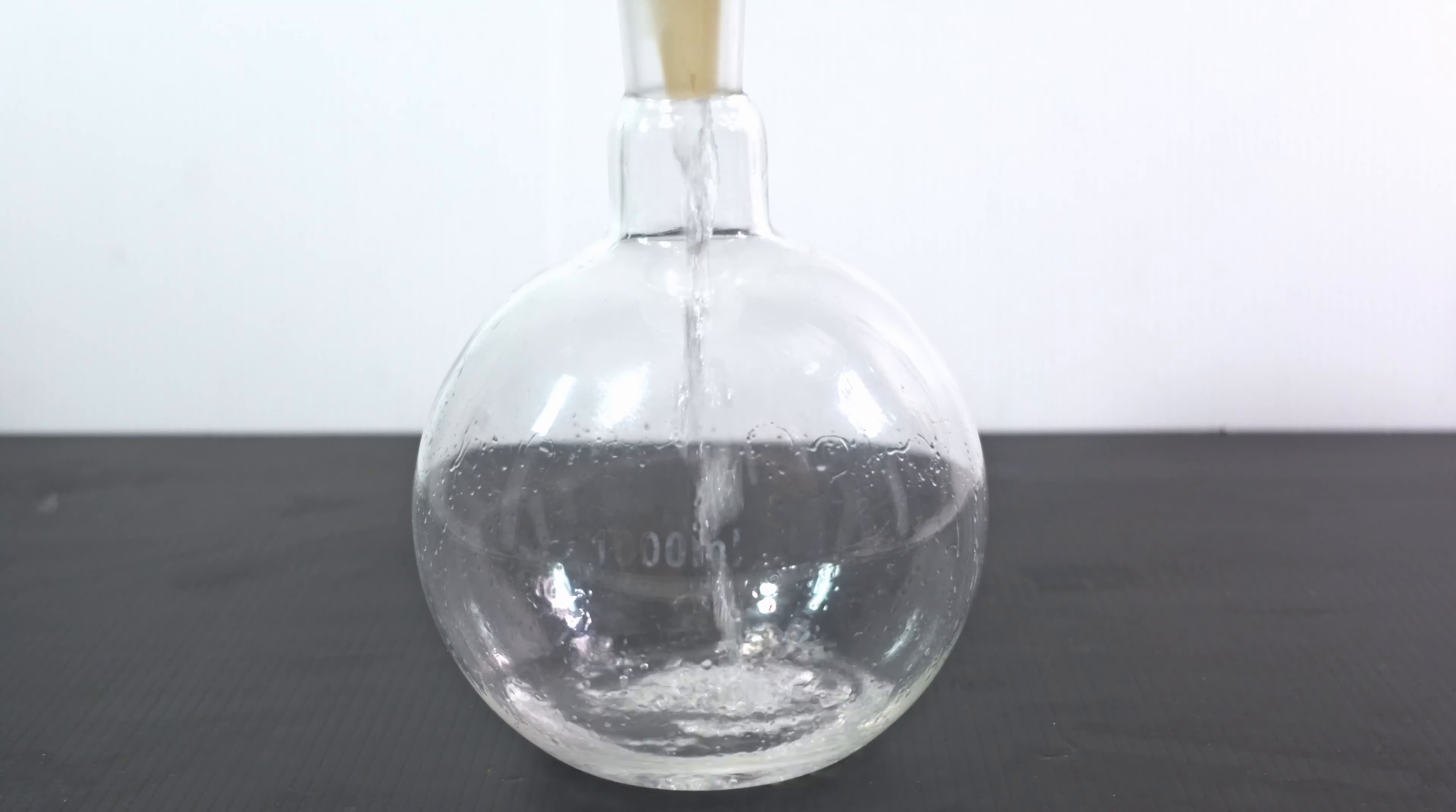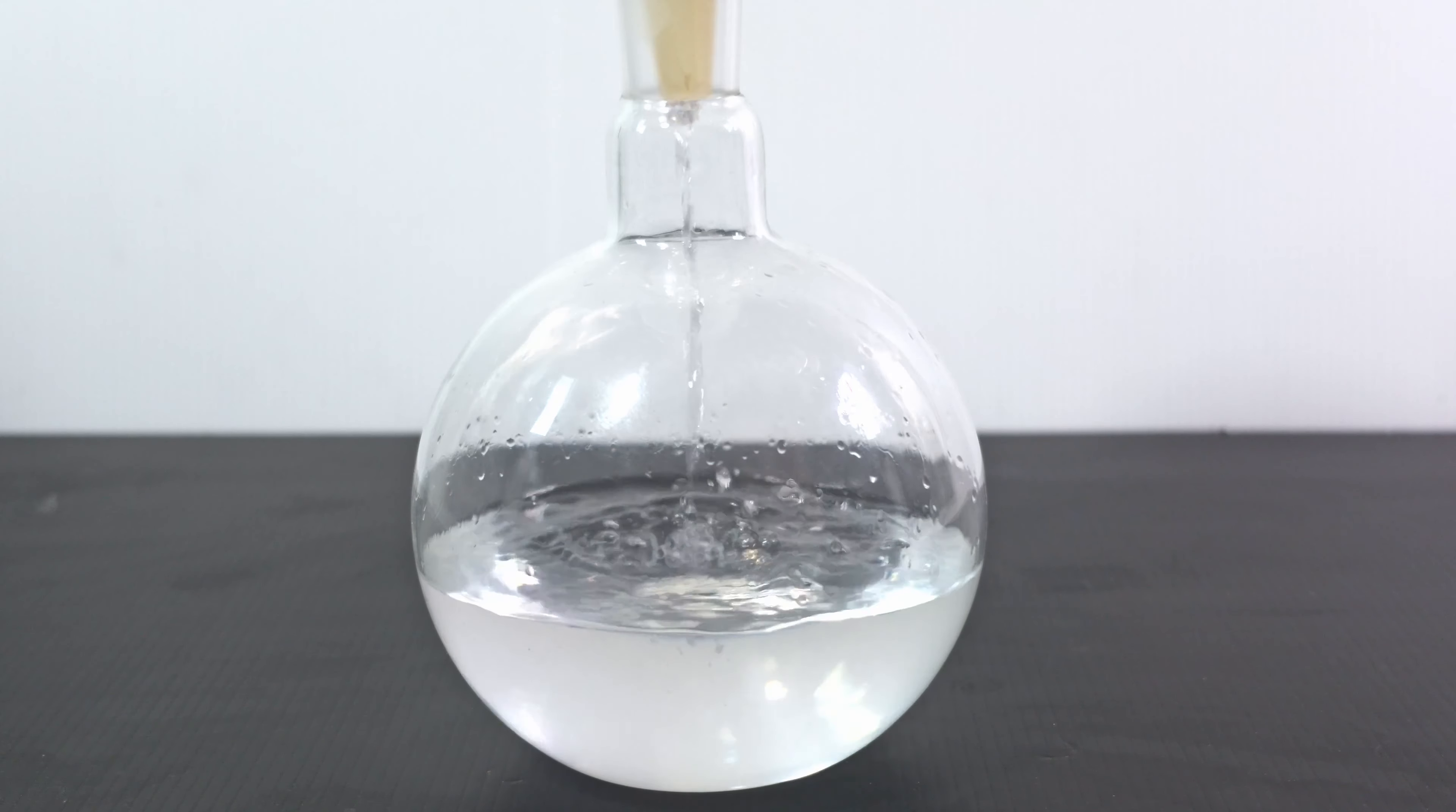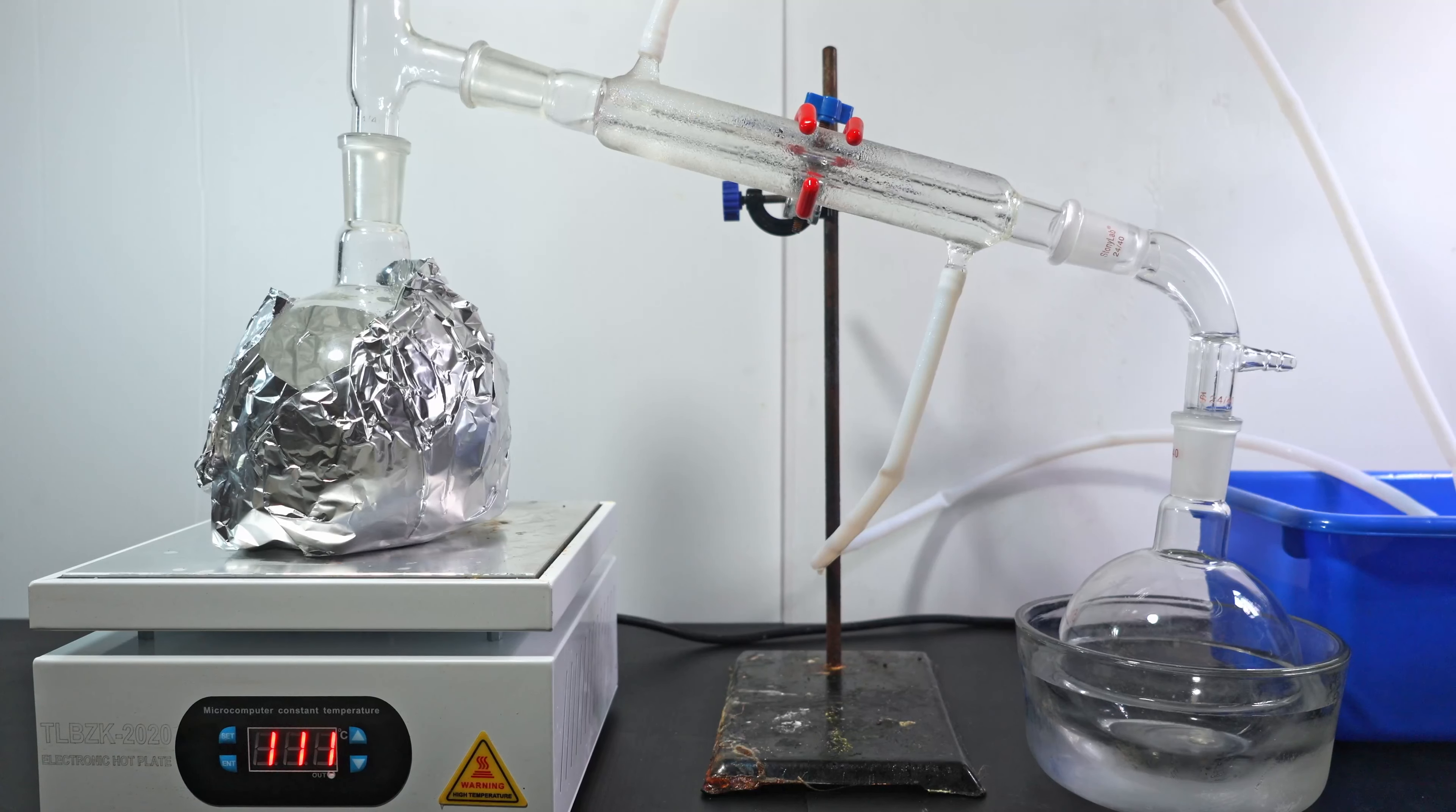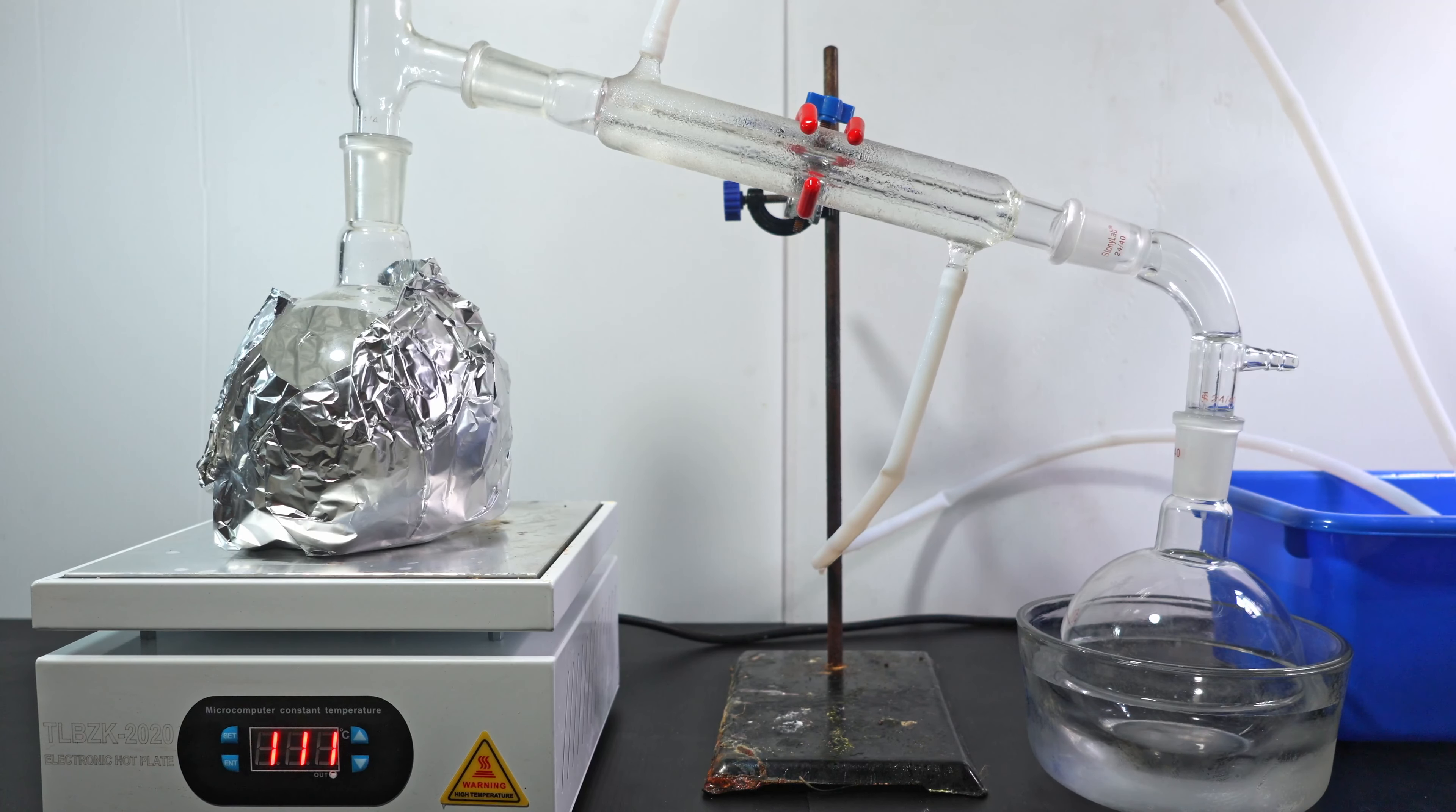Next, I decant off the tert-butyl chloride into a boiling flask. I heat it over 100 degrees to quickly boil this. During the distillation, the boiling flask becomes more translucent as the impurities concentrate, mainly sodium carbonate.